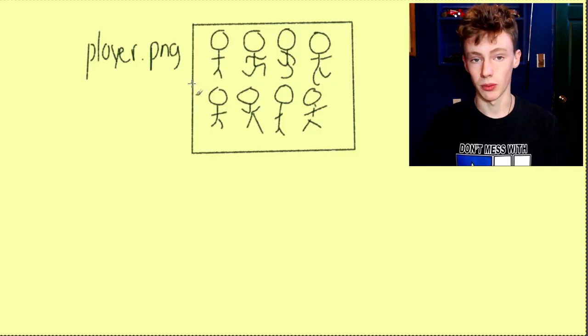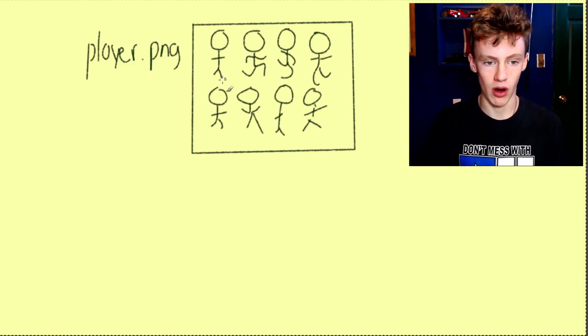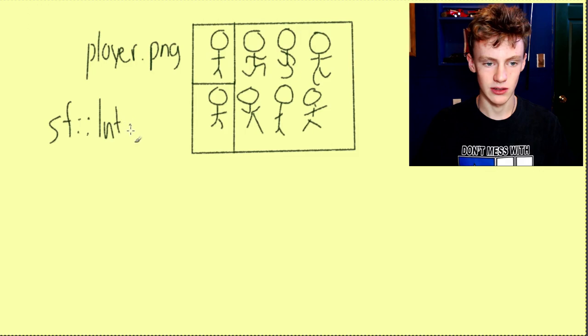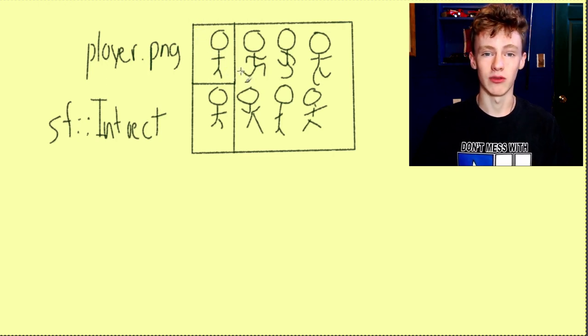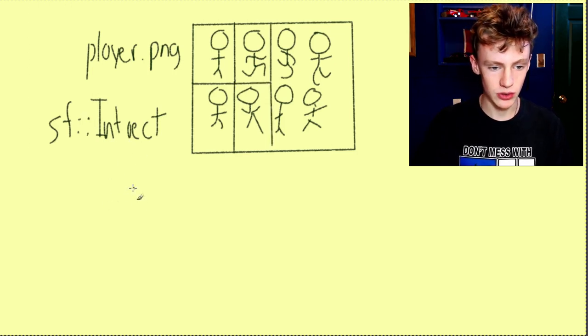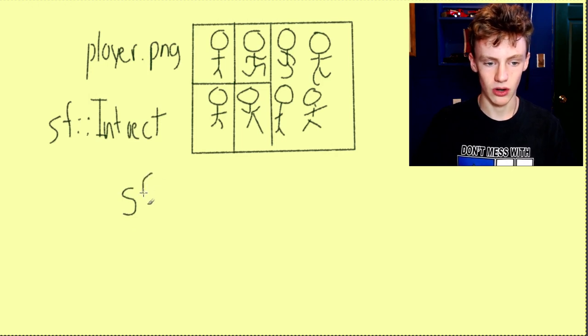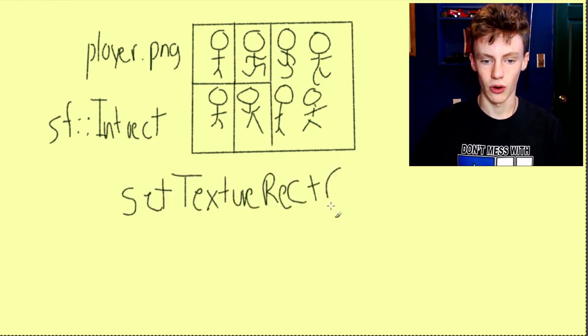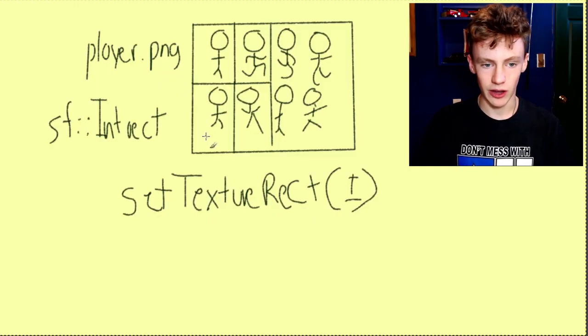The way we achieve animation in SFML is to store all possible frames of animation for our player on a single image called a sprite sheet. Then we use something called sf::IntRect — essentially a grouping of four coordinates: the x and y position of each frame in the sprite sheet, plus the width and height of each frame. To apply different frames we use the SFML method setTextureRect, which takes our sf::IntRect as a parameter.